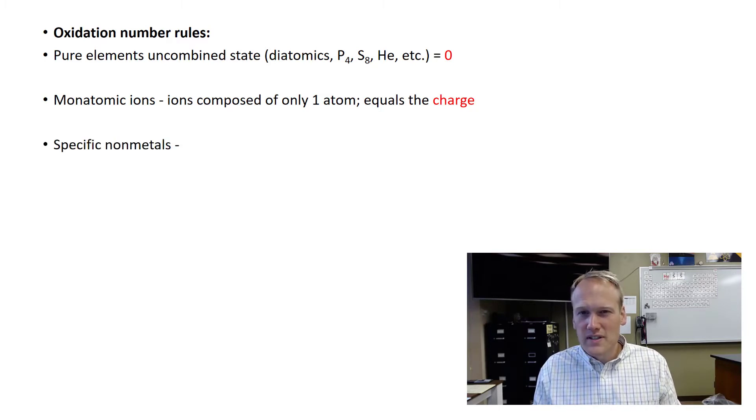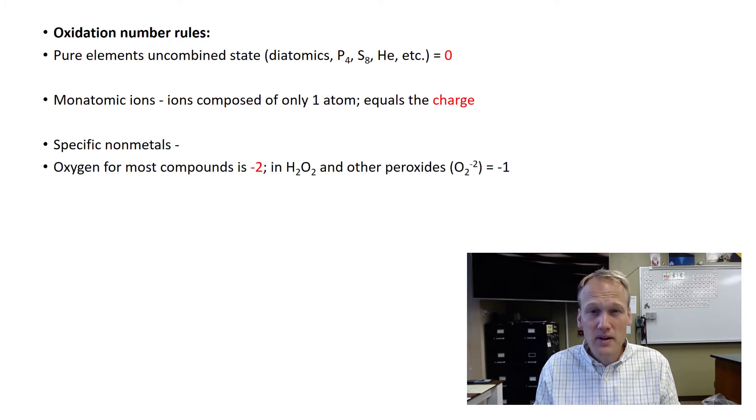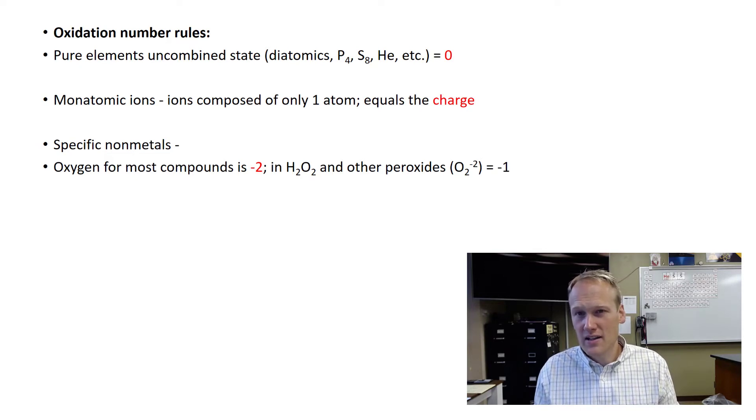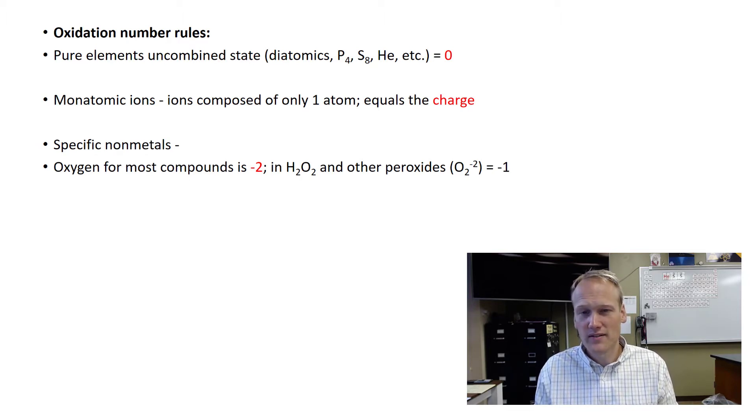This next part is where the rules get a little different depending on what the element is doing. For instance, oxygen is typically a negative two. But when it's in a peroxide, the peroxide's total charge is negative two, which means each of those oxygens has to be minus one.